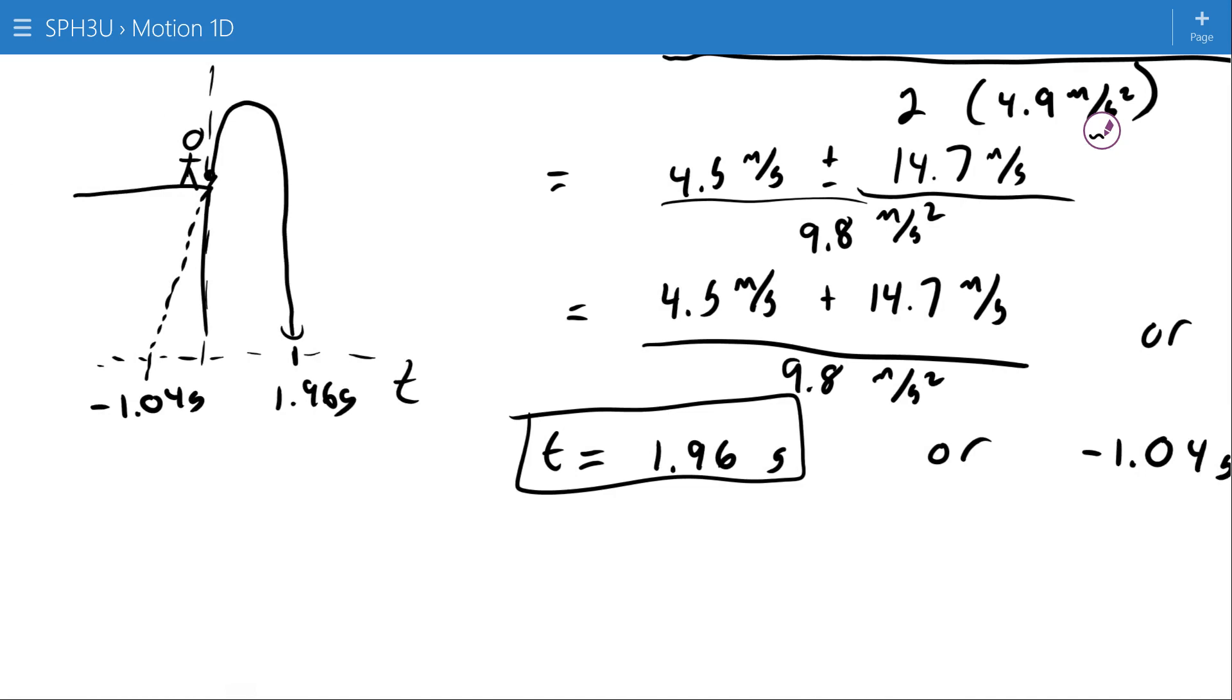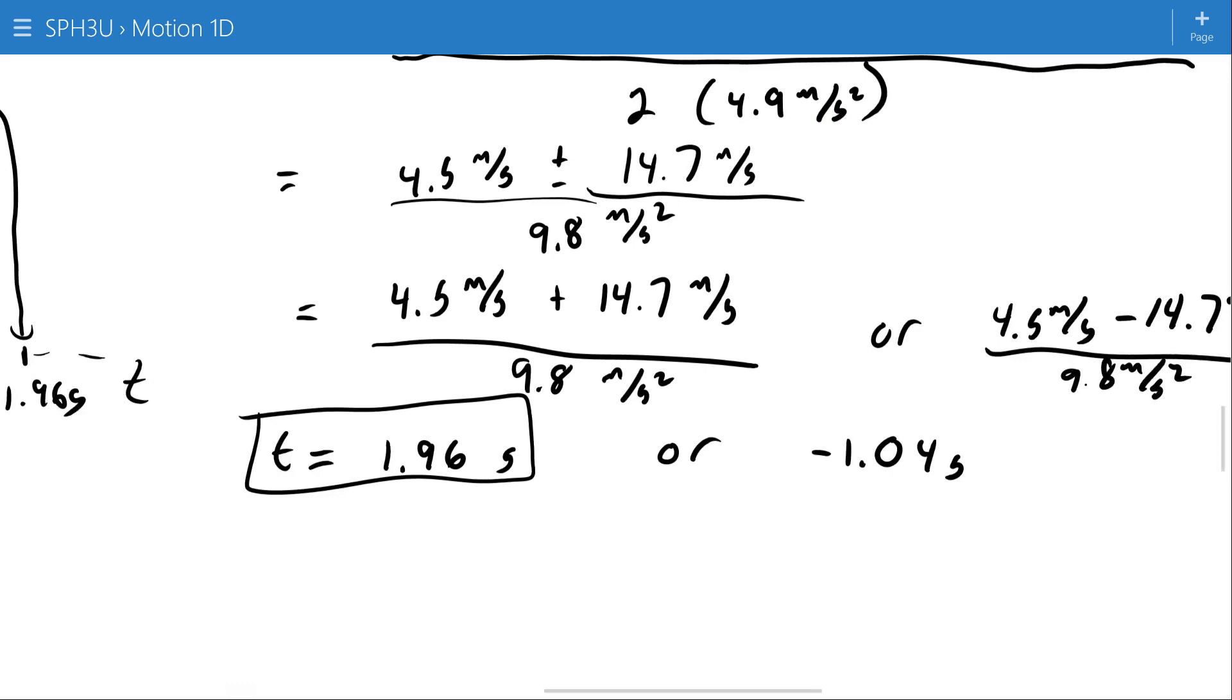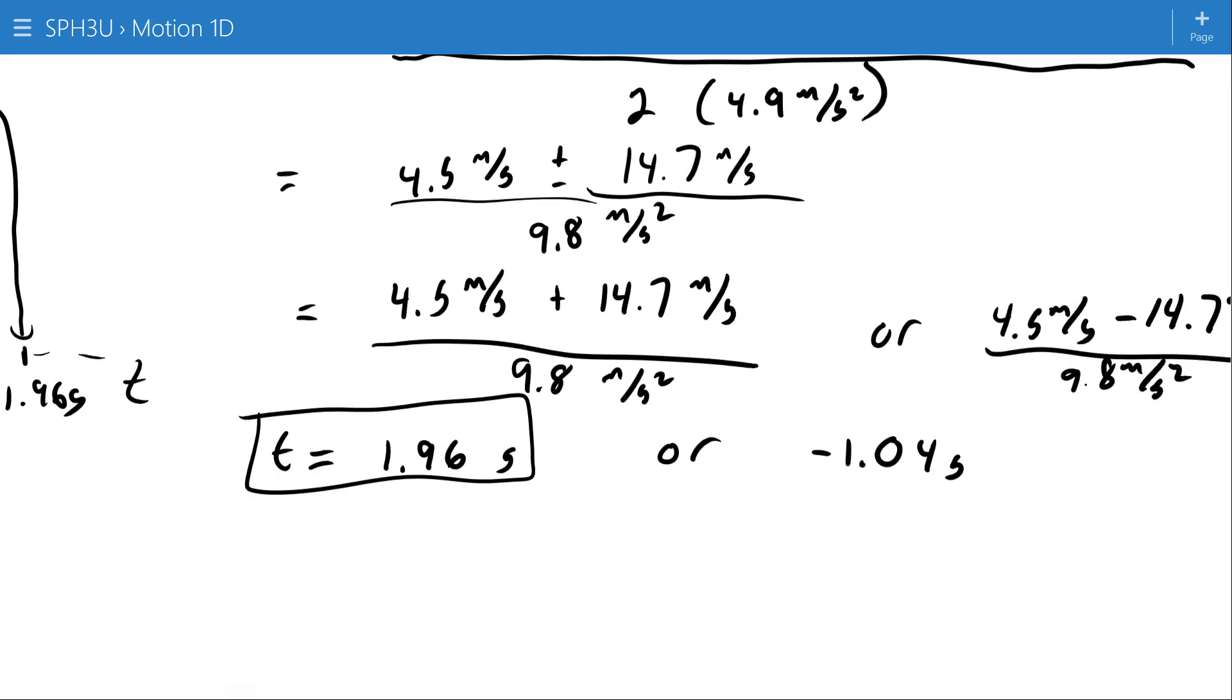This is important to discuss because you have to remember that you're using a model. You're using equations that are based on the idea of constant acceleration. The equations are going to predict the results as if that constant acceleration goes on from negative infinite time to positive infinite time. And it's up to you when you're using your model to remember that and to remember to make reasonable choices about whether or not what the model is saying is going to happen is valid or whether it's wrong. So here, I mean, this is sort of an obvious one that the t is 1.06 and not 1.04 because 1.04 is in the past and we're not interested in the past.